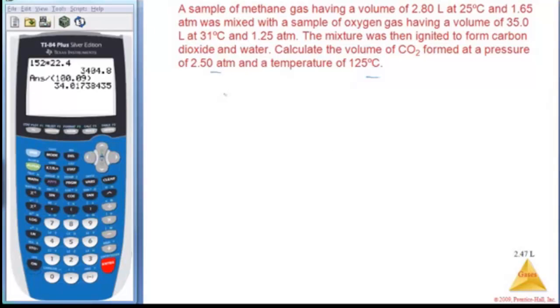So first we're going to write the balanced equation. So I'm starting with methane. You should know methane is CH4. Combustion always means add oxygen. We always get CO2 and H2O. Okay, so I need two of those, and then I'll need two of those.